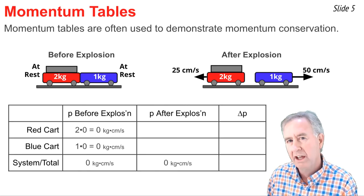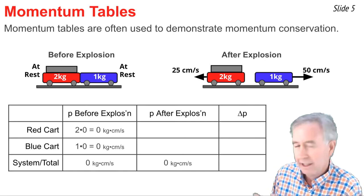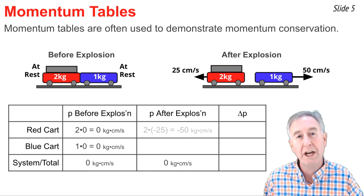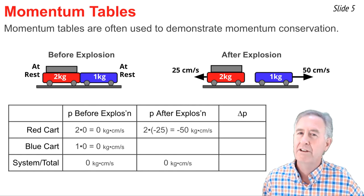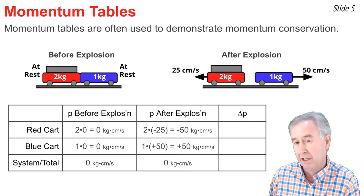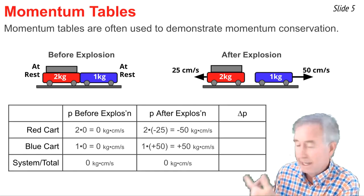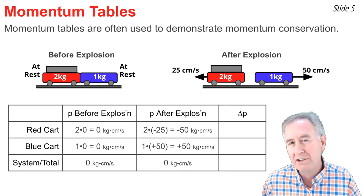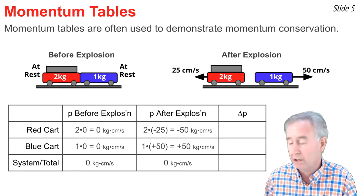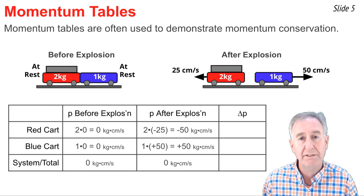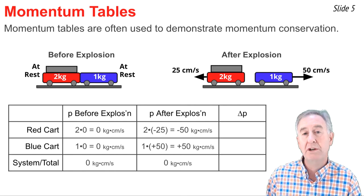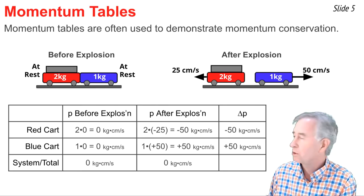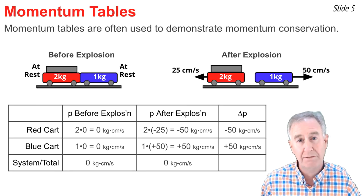For the red cart after the explosion, its mass is 2 and its speed is 25 meters per second to the left, so m times v is 2 times negative 25, giving negative 50. For the blue cart, m times v is 1 times positive 50, giving positive 50 units of momentum. Combining negative 50 and positive 50 gives zero — the same total as before the explosion. The red cart's momentum changes from zero to negative 50 (a change of negative 50), and the blue cart's from zero to positive 50 (a change of positive 50), which sum to zero.